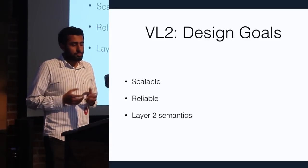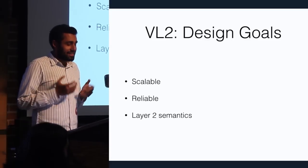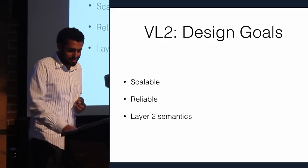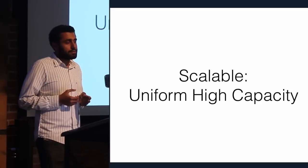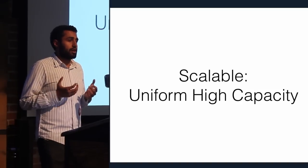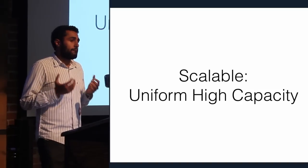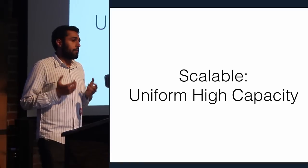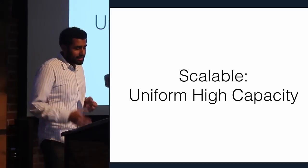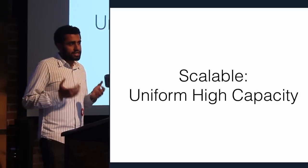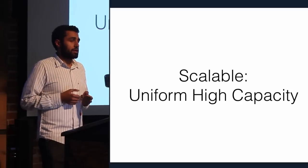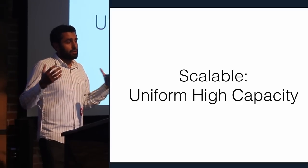The design goals of VL2 are pretty straightforward — they wanted a scalable network that's going to be reliable and still have layer two semantics. By scalable, they mean a network with high capacity where the servers were not bound by the fabric, but bounded only by the ability for the systems to produce traffic. And they wanted full bisection bandwidth — meaning at the worst point of the network if you cut it, there's an equal amount of bandwidth on both sides.